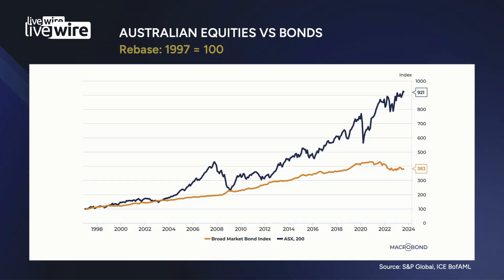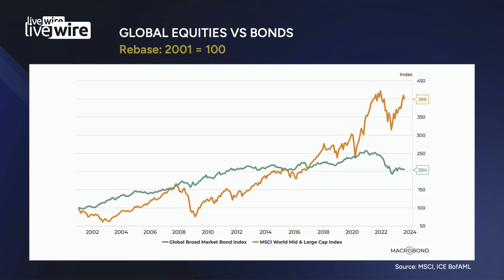Let's put this all into context with the next two charts. First up we have Australian equities versus bonds. Equities have really outperformed bonds in this country sustainably over the last 25 years. In contrast, you've got global equities versus bonds. At the global level, at that mid and large cap level, equities have only really outperformed since 2017. Between 2008 and 2016, bonds were actually outperforming.